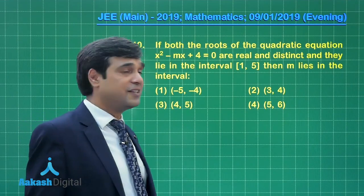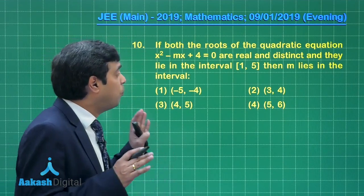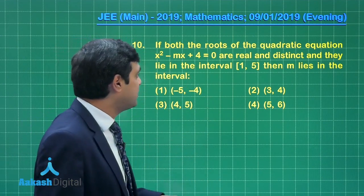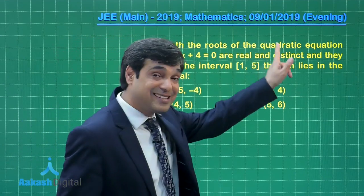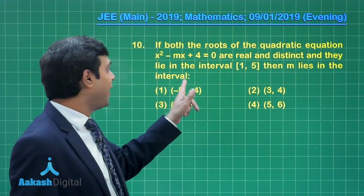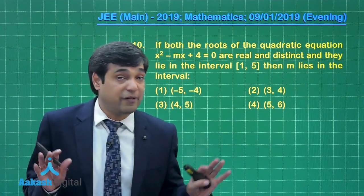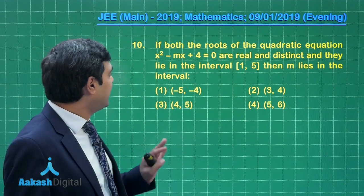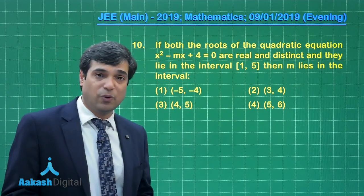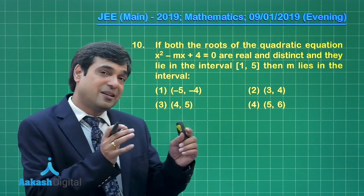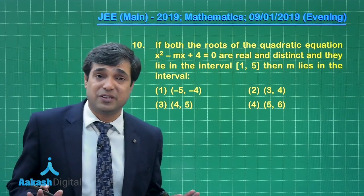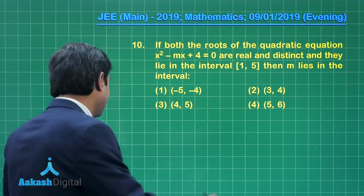Moving on to the next question, that is question number 10. If both roots of the quadratic equation x² - mx + 4 = 0 are real and distinct and they lie in the interval [1, 5], then m lies in the interval. When you look at the equation x² - mx + 4, you cannot convert it directly into some perfect square and some easy format. You have to go with the proper process for this kind of question. So let us start this question here.